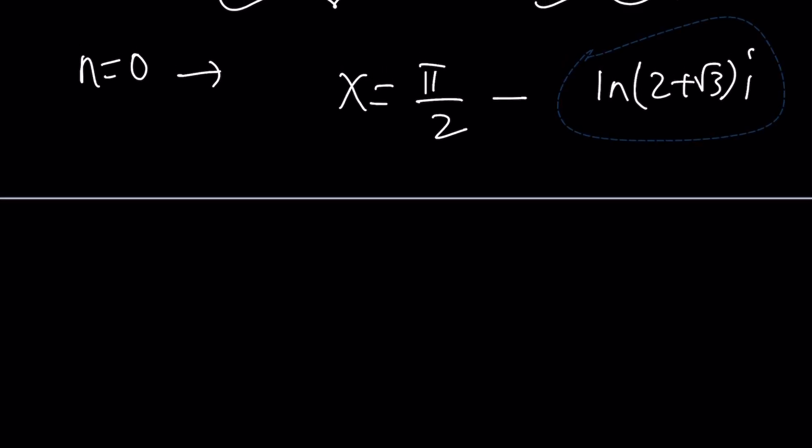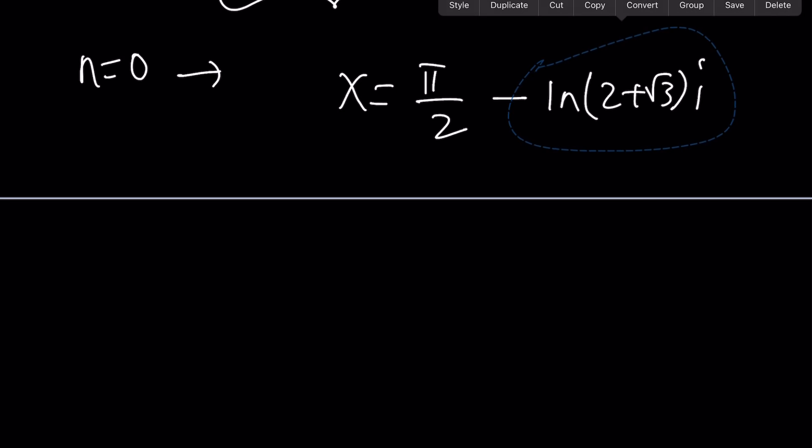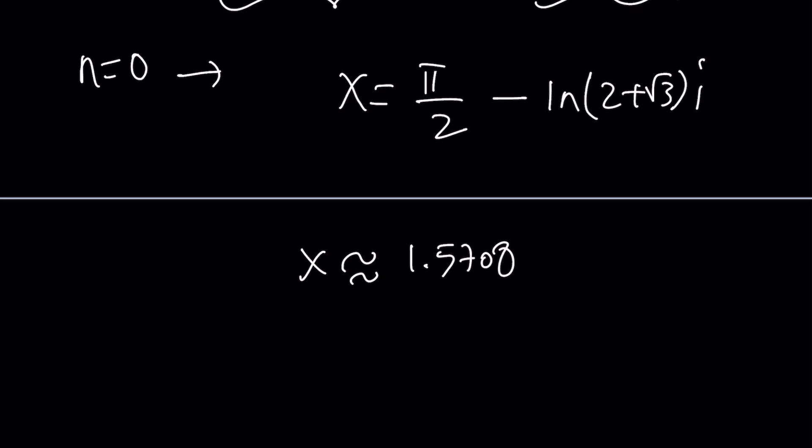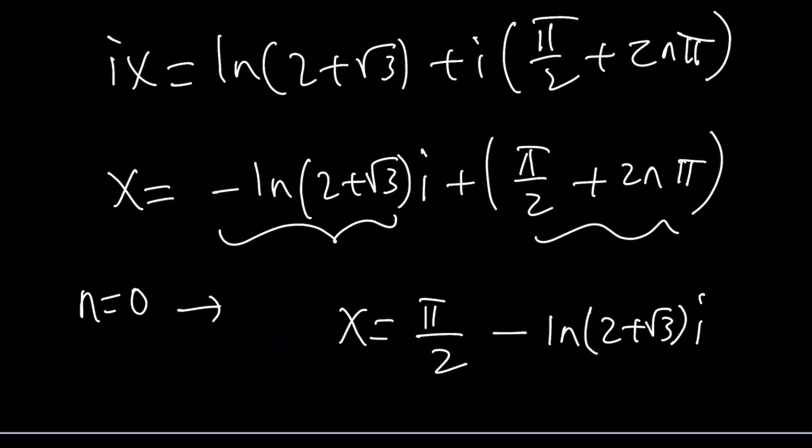So that's going to be my x value for n equals 0. And this is going to be approximately 1.5708 plus minus 1.3170i. Why did I put a plus minus? Because 2 plus root 3 and 2 minus root 3 are reciprocals. So they're just going to bring a negative 1 to the front and so on and so forth.